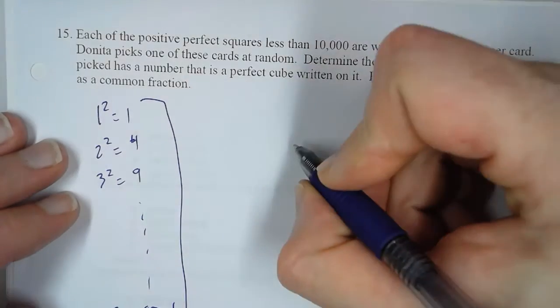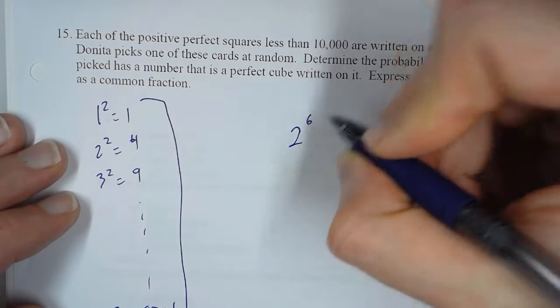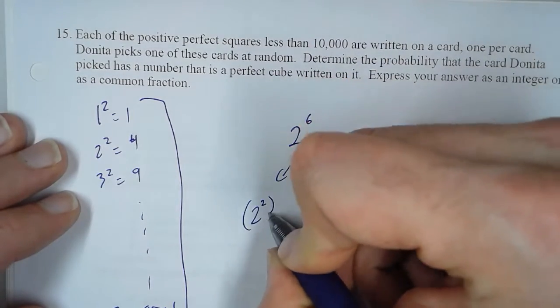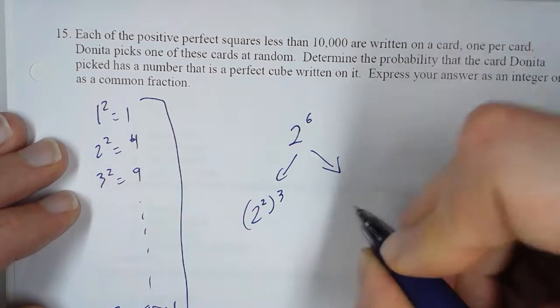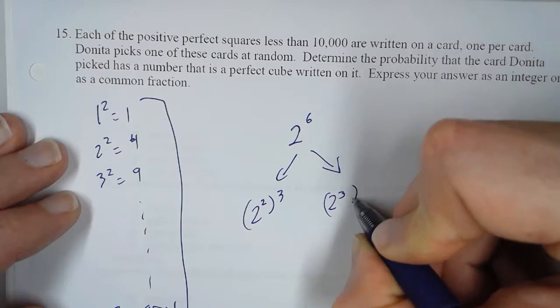So, for example, 2 to the sixth, we can say that this is a perfect cube, because it's 2 squared cubed. We can also say that this is a perfect square, because we can say 2 cubed squared.